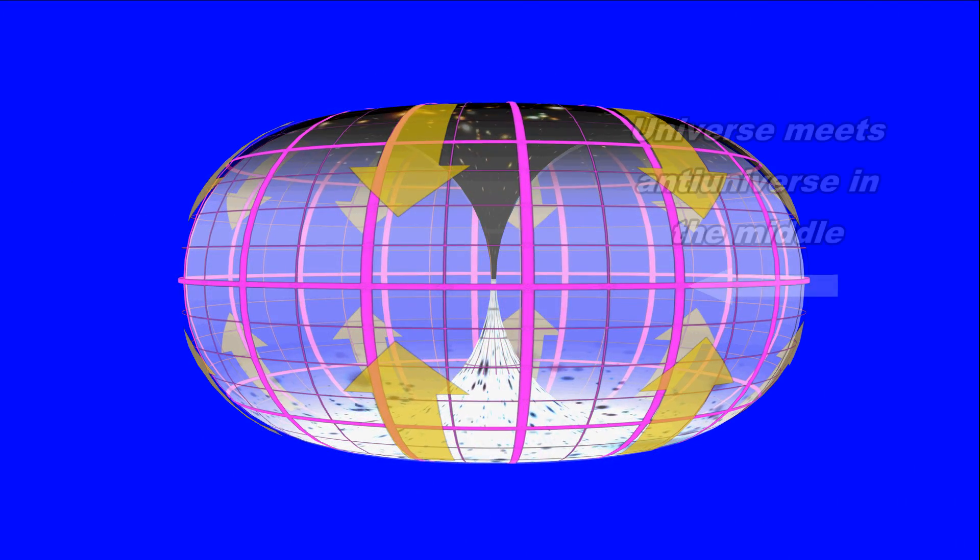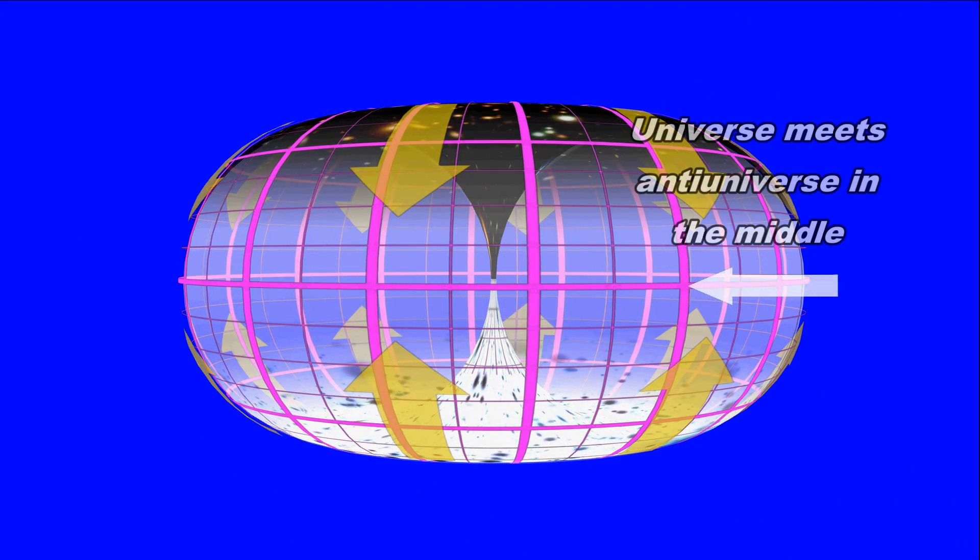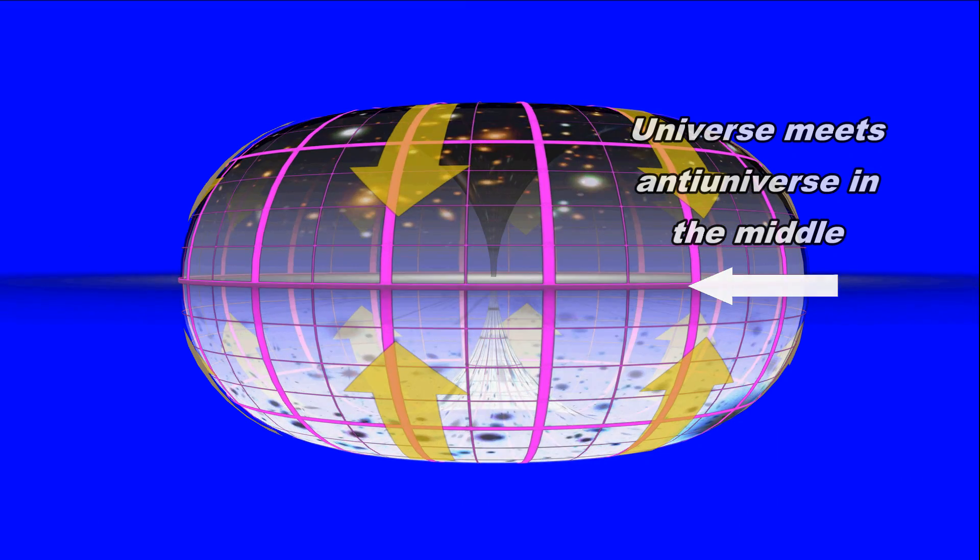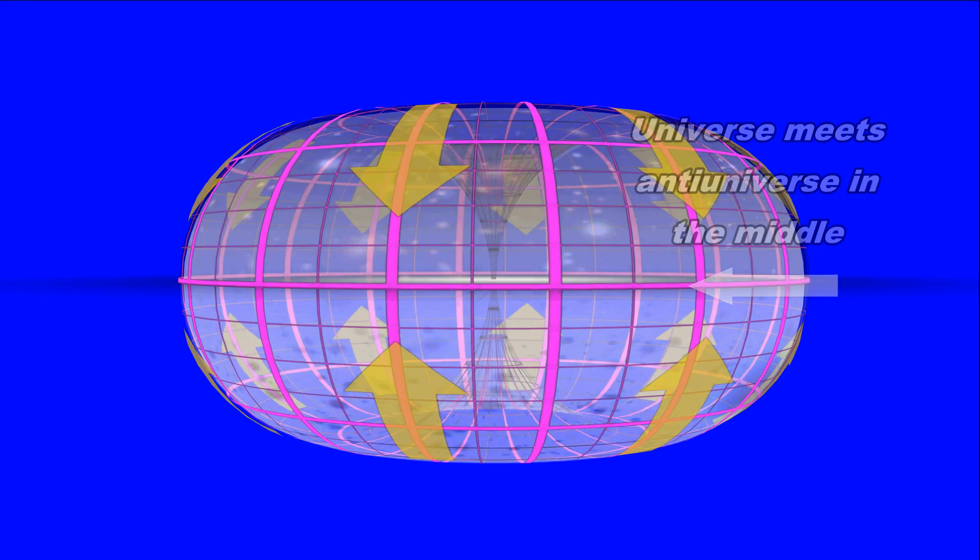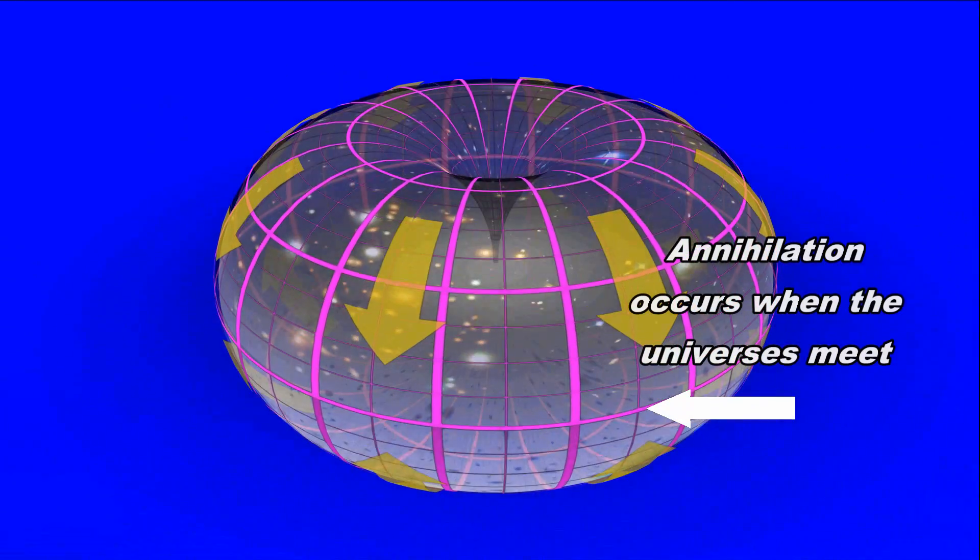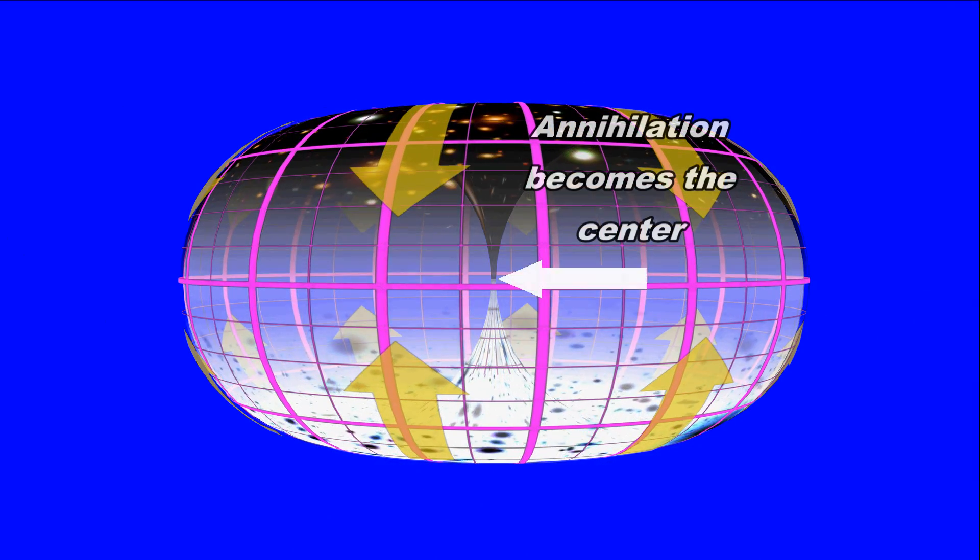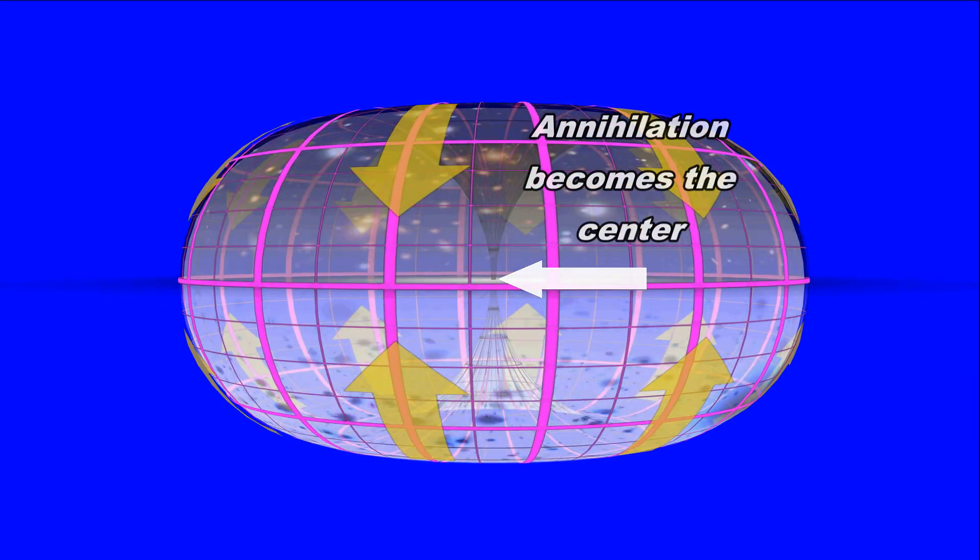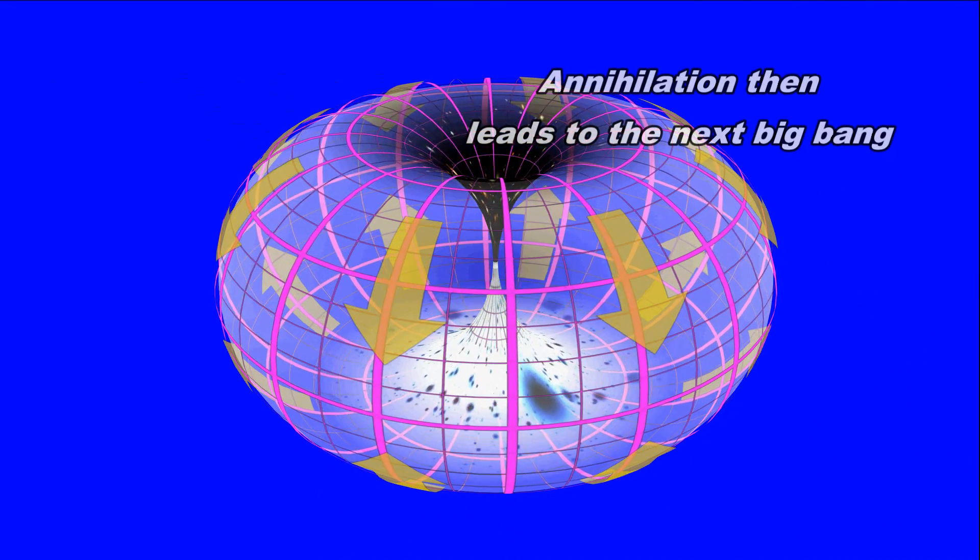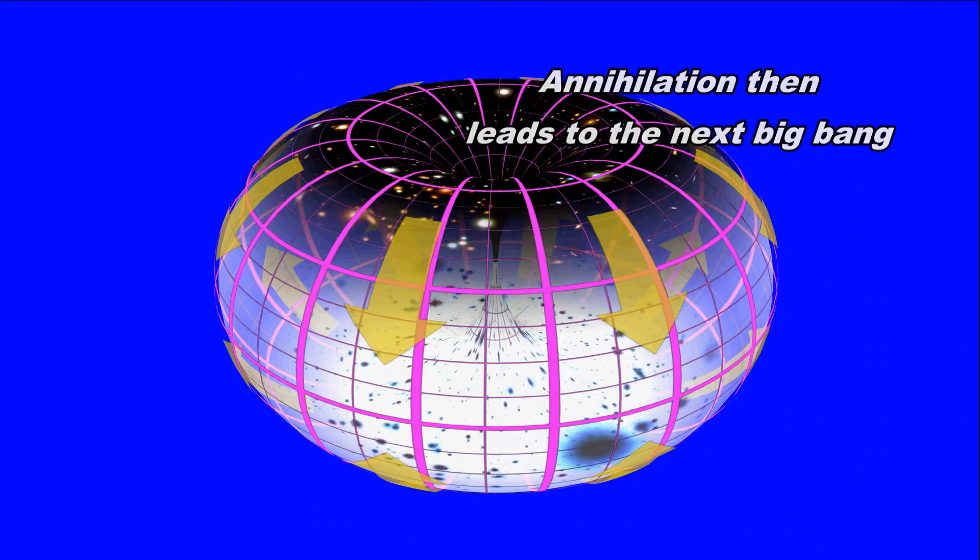How will the universe end? At the bagel's outer edge, the two equal but opposite universes meet and do what matter and antimatter always do: they annihilate. But here's the trick. They annihilate in a burst of energy. And the bagel's outer rim is also its center, so the explosion of annihilation is, guess what? The next big bang.